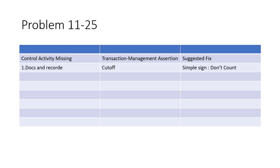The second misstatement: the incorrect price was used on sales invoices for billing shipments to customers, because the wrong price was entered into the computer master file of prices. The control activity missing was documents and records. The assertion affected was accuracy. The suggested fix is to make sure that any changes to the price master file are properly reviewed.